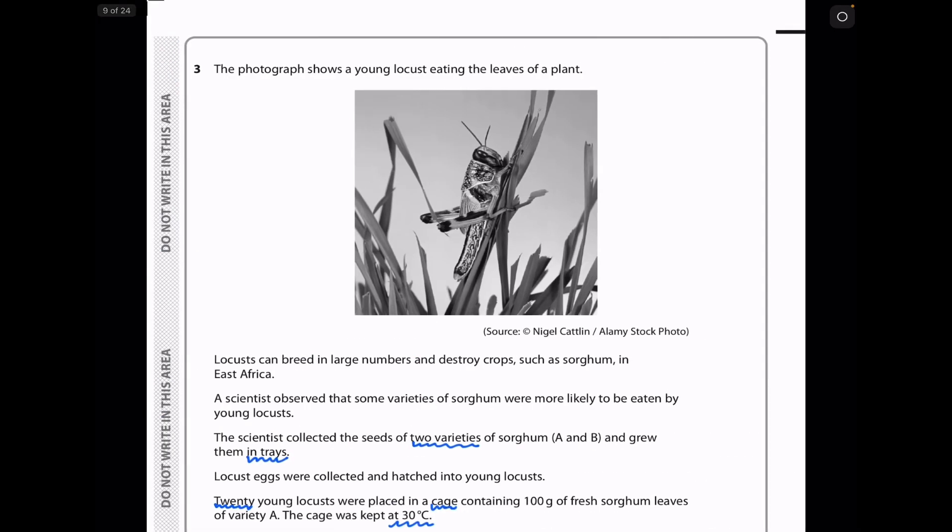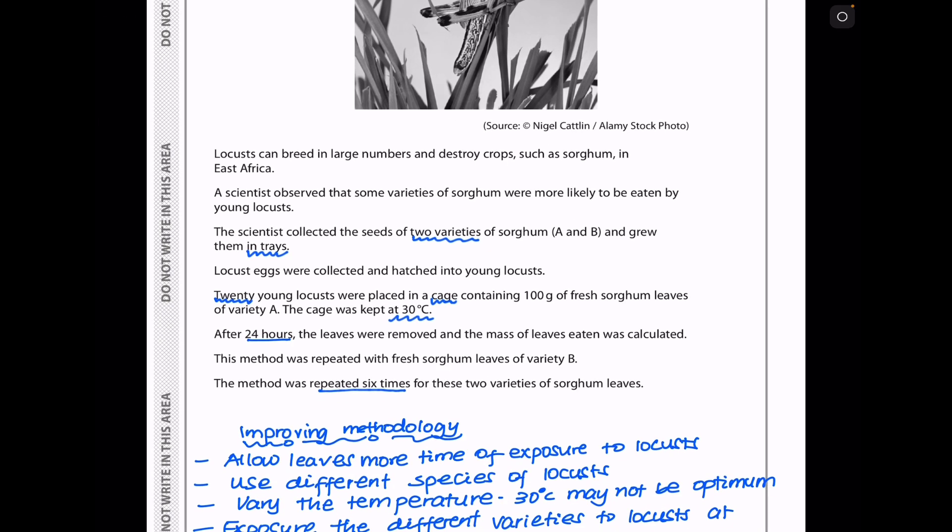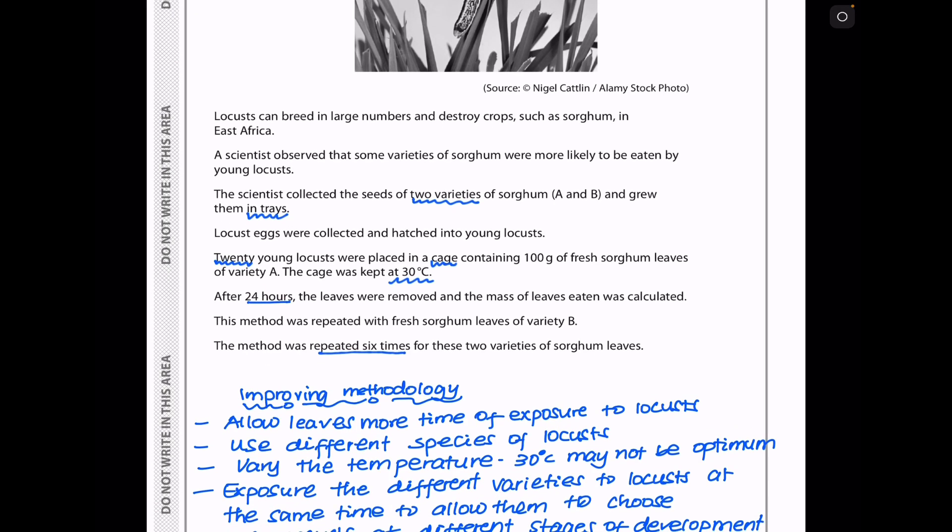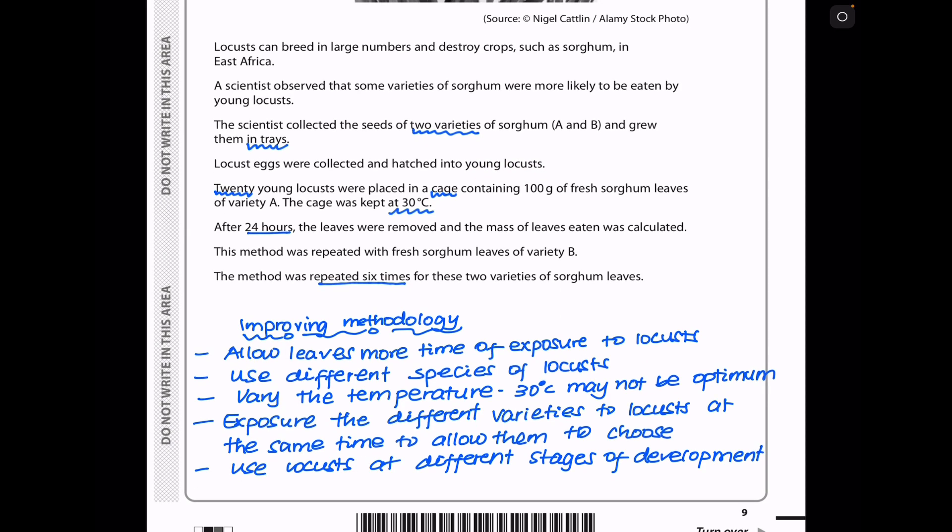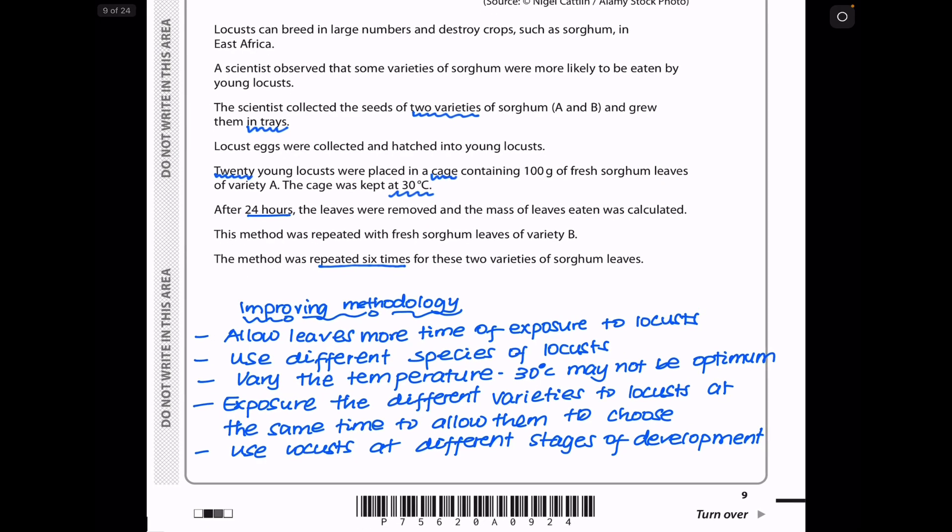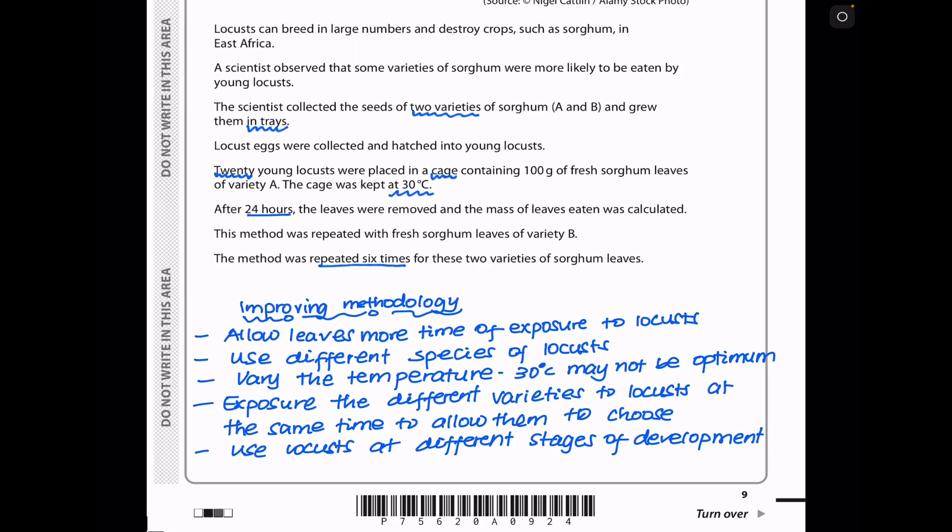Let's continue to question 3. Question 3. The photograph shows a young locust eating the leaves of a plant. This is the locust and these are the leaves that are being eaten. They say locusts can breed in large numbers and destroy crops such as sorghum in East Africa. A scientist observed that some varieties of sorghum were more likely to be eaten by young locusts. The scientist collected the seeds of two varieties of sorghum, which is sorghum A and B, and grew them in trays. Locust eggs were collected and hatched into young locusts. They say 20 young locusts were placed in a cage containing 100 grams of fresh sorghum leaves of variety A. The cage was kept at 30 degrees. And after 24 hours, the leaves were removed and the mass of the leaves eaten was calculated.